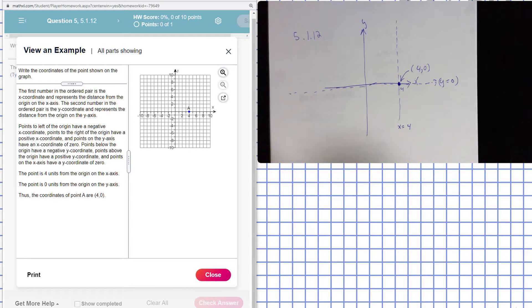Write the coordinates of the point shown on the graph. The first number in the ordered pair is the x-coordinate. It represents the distance from the origin on the x-axis. The second number in the ordered pair is the y-coordinate. It represents the distance from the origin on the y-axis.